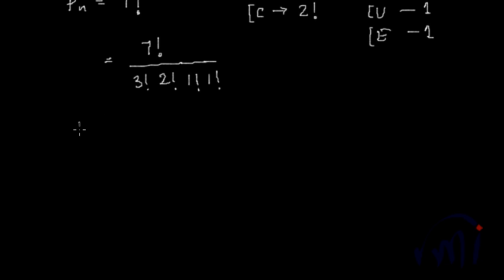suppose we have n objects where n1 number of objects are of 1 type and n2 number of objects are of 2 type and then we have n3 number of objects which are of 3 type and suppose we have nk number of objects which are of k type and they together are actually equal to n, which is the total number of objects.